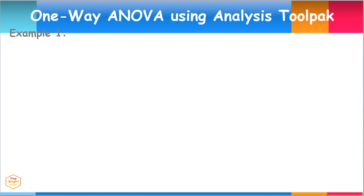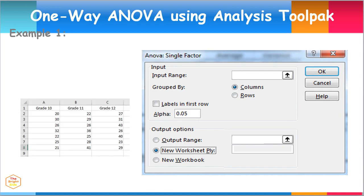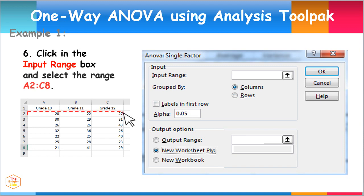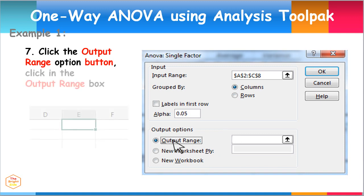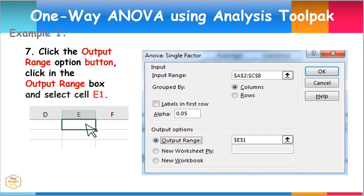Let us input the data for study hours of students from Grade 10, Grade 11, and Grade 12. To do this, click in the Input Range box and select the range of cells from A2 to C8. Next, click the Output Range option button, then click in the Output Range box and select cell E1. This provides the location for the resulting output. Click OK.